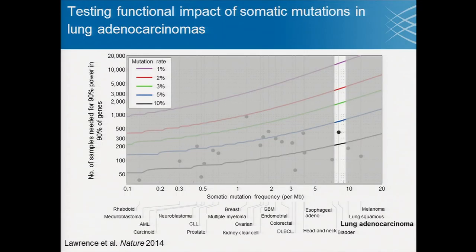To test this approach, we decided to look at mutations in lung adenocarcinoma. Not only is it one of the leading causes of cancer deaths worldwide, but it also has a very high mutation rate. So identifying those mutations in lung adenocarcinoma that are functionally relevant above the background mutation rate, purely computationally, is a challenge.